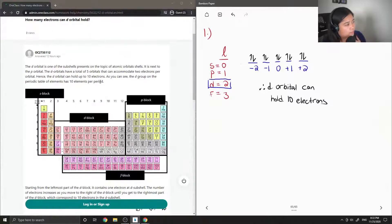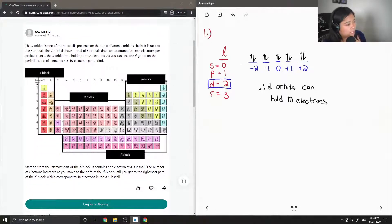So you can see the d block on the periodic table has 10 elements per period. They conveniently added the periodic table and labeled all the different blocks. So the s block are columns 1 and 2, and then these are the 6 for the p block. And the d block is in the middle right here.